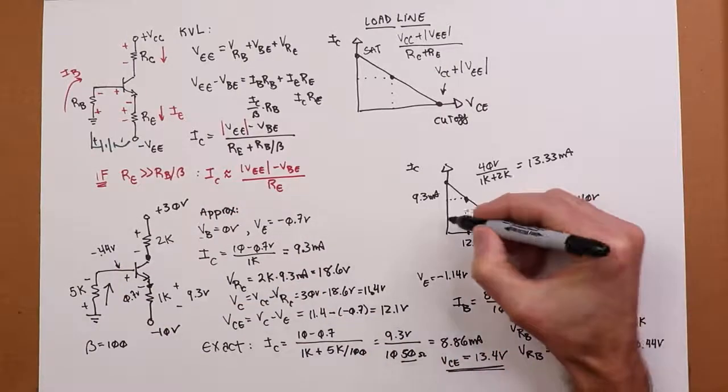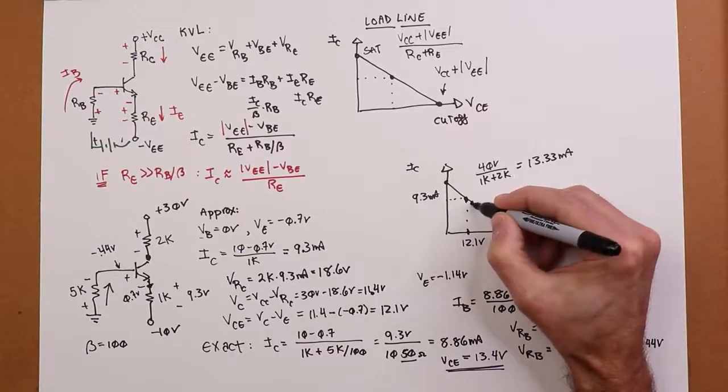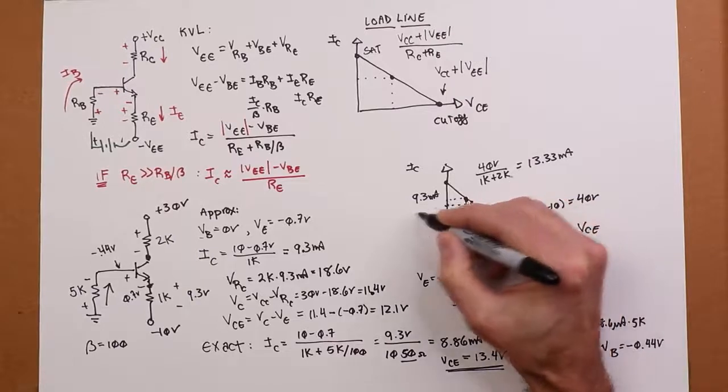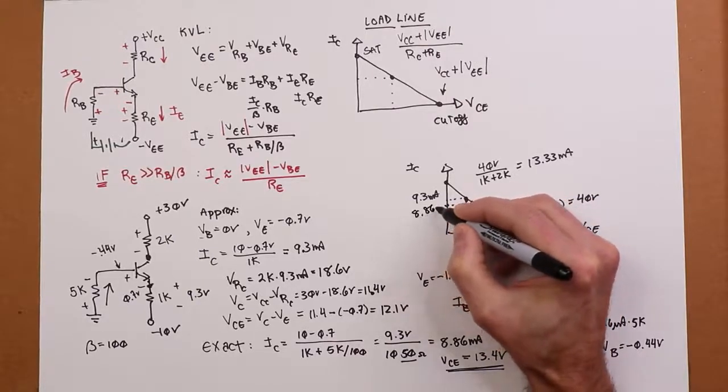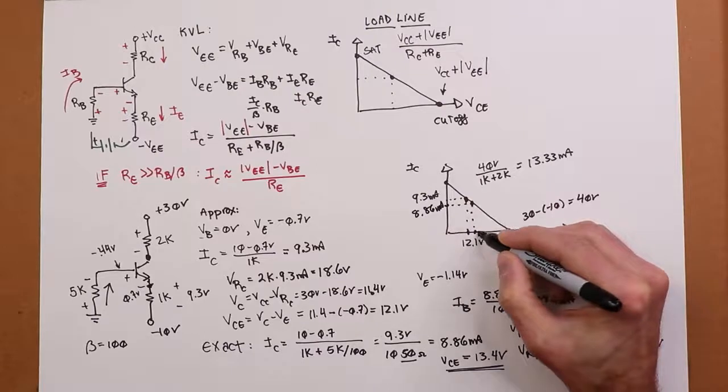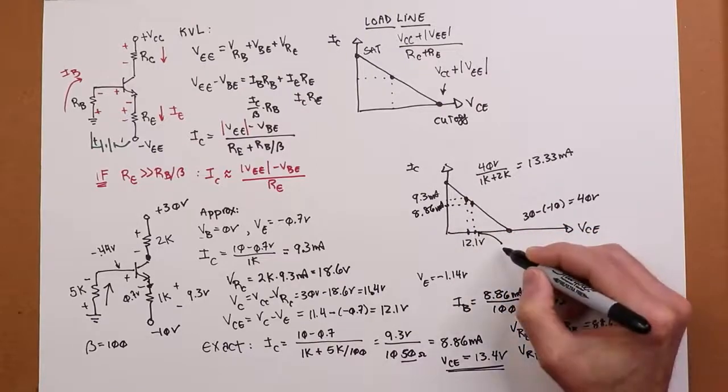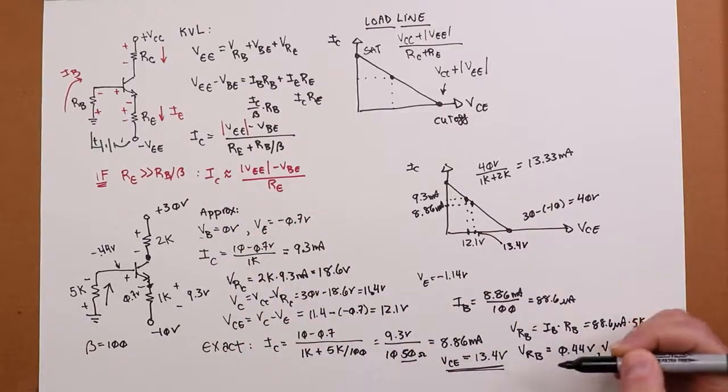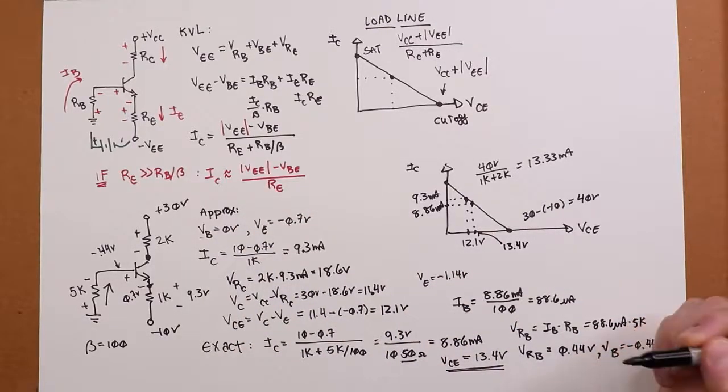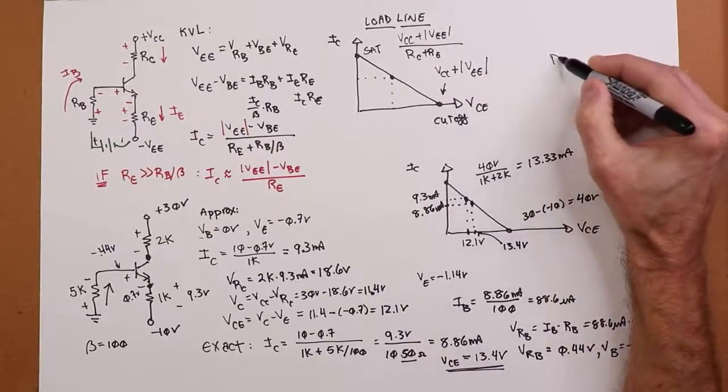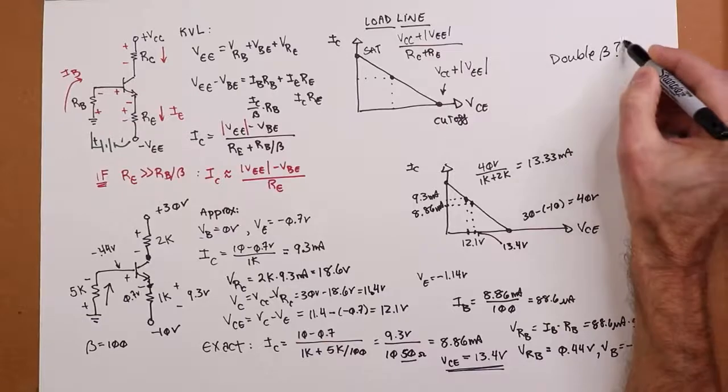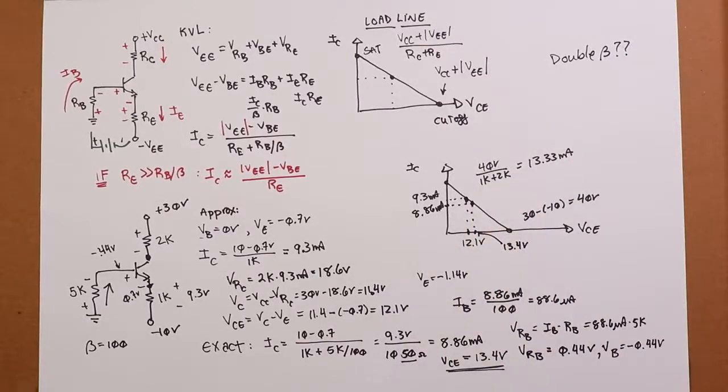If we plot this on our load line and we end up with a new Q point. So this is your 8.86 and this in here is your 13.4. So that's the difference between approximation and exact. Now the question becomes, what about the beta? What happens if you double beta? Where does the Q point wind up? Well, think about this for a sec. If you were to double beta, this goes to 200.